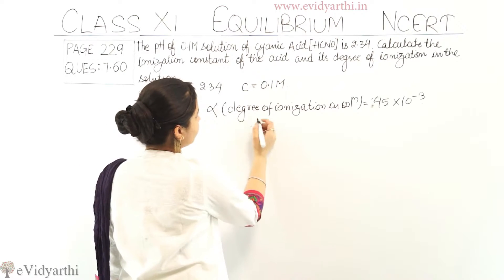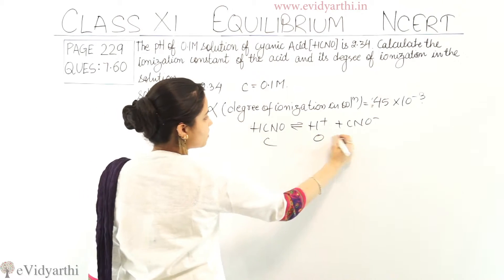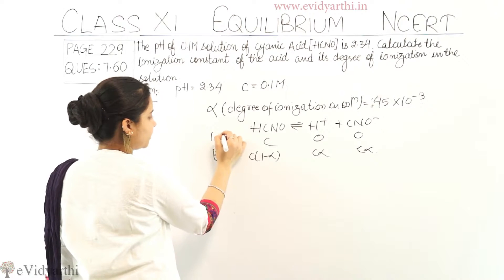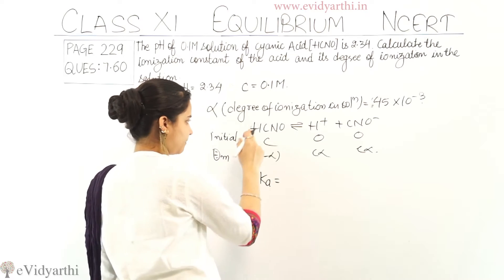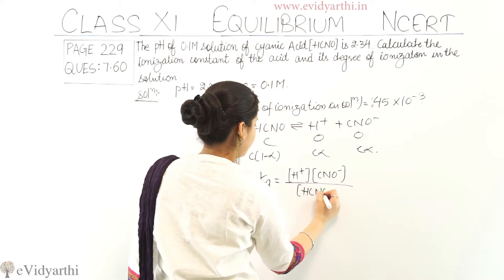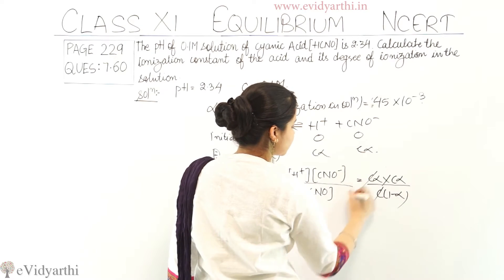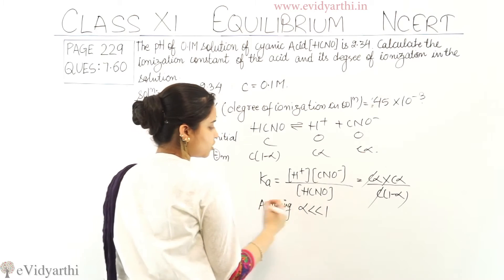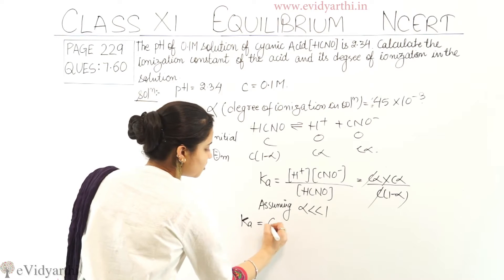The reaction written is HCNO in equilibrium with H⁺ plus CNO⁻. Initial concentration was C, 0, 0, and at equilibrium it was C(1−α), Cα, Cα. The expression for ionization constant Ka = [H⁺][CNO⁻] / [HCNO] = Cα × Cα / C(1−α). The C cancels out giving Cα²/(1−α). Assuming α << 1, we can ignore alpha in the denominator, so Ka = Cα².